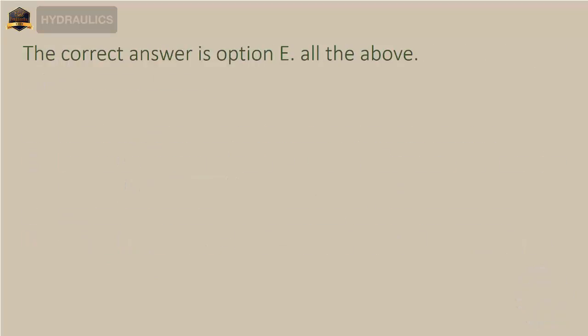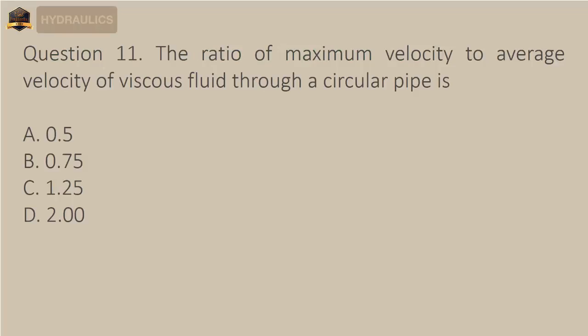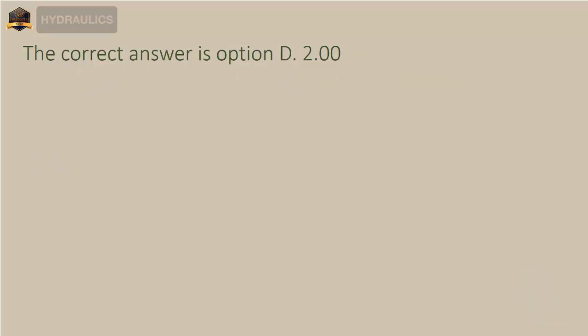The correct answer is option E: all of the above. Question 11: The ratio of maximum velocity to average velocity of viscous fluid through a circular pipe is — A) 0.5, B) 0.75, C) 1.25, D) 2.00. The correct answer is option D: 2.00.